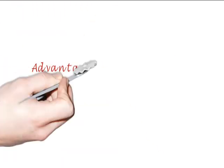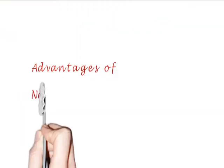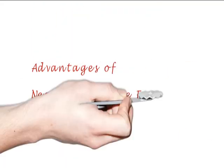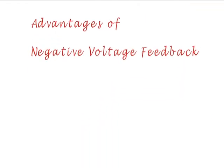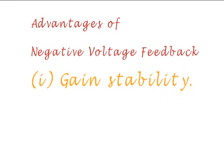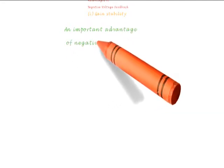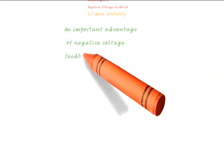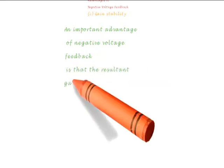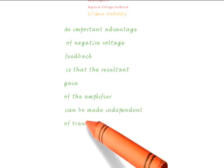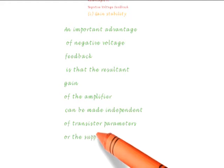Today's topic is the advantage of negative feedback — negative voltage series feedback. There is a list of advantages, and one of them is gain stability. Gain stability means the total gain of the circuit should be constant, that is, independent of the frequency of the applied signal. This can be achieved by negative voltage series feedback circuits.